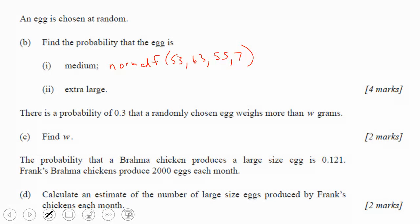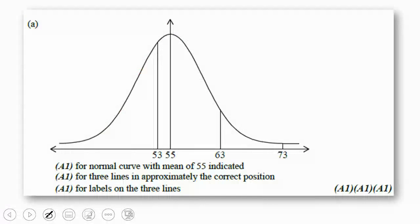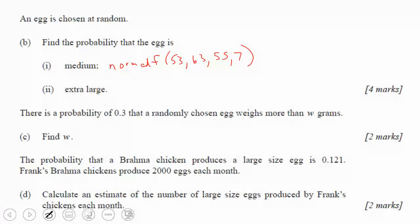And to find the probability that it was extra large, if you look back, extra large was 73 to infinity. So again, normal CDF, 73 to infinity, or you just enter a big number, 55, 7.